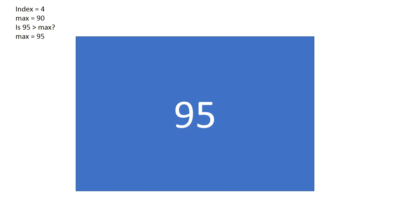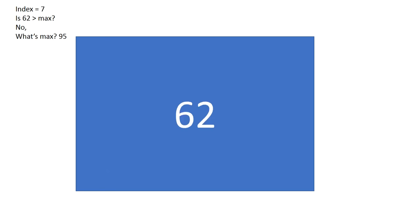We're not done yet — we're still at the fourth element and need to go all the way to the seventh. We come to 82 — is 82 greater than max? No. How about 77? No. Is 62 greater than max? No. So our final max value is 95, since it hasn't changed since we set it. That is the last element in the array.